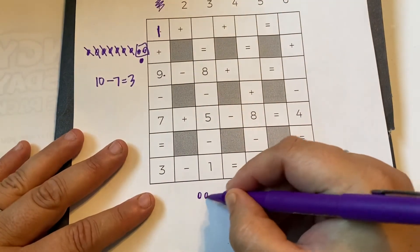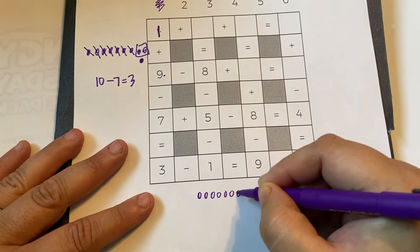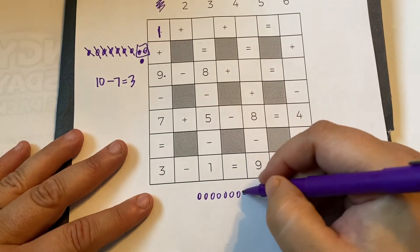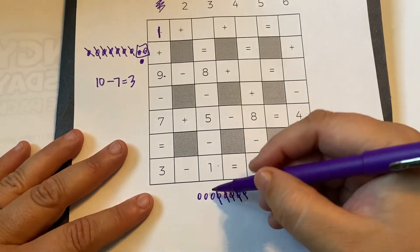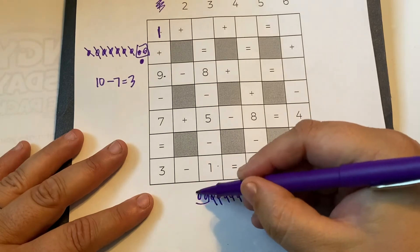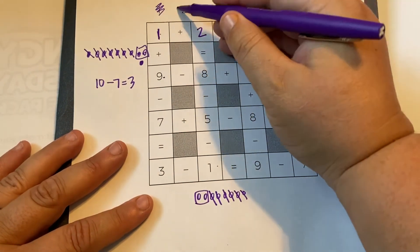So here's one, two, three, four, five, six, seven, eight minus five. One, two, three, four, five minus one. So our number is two.